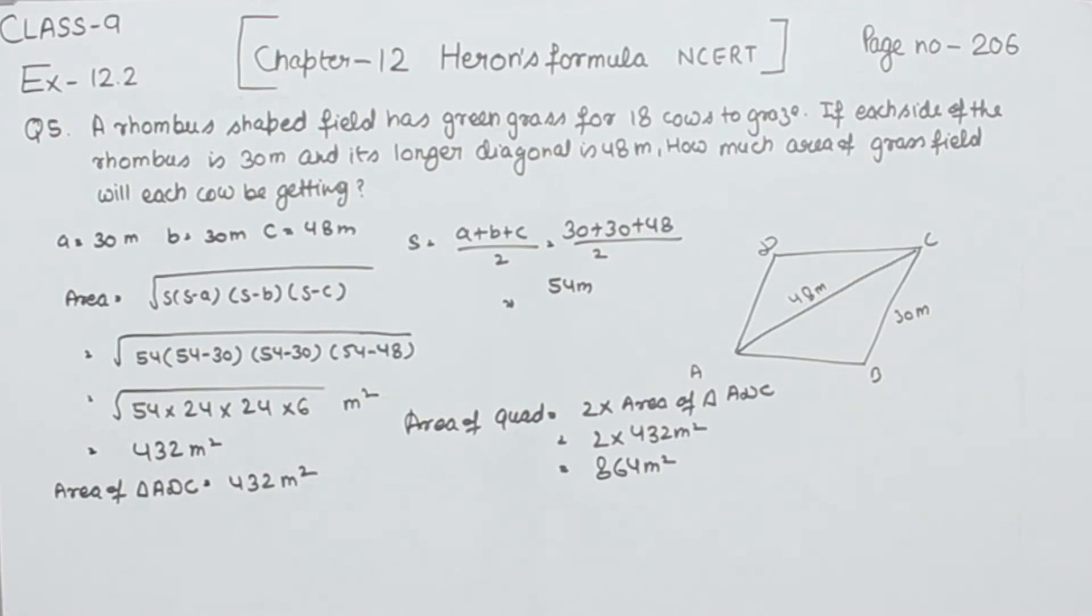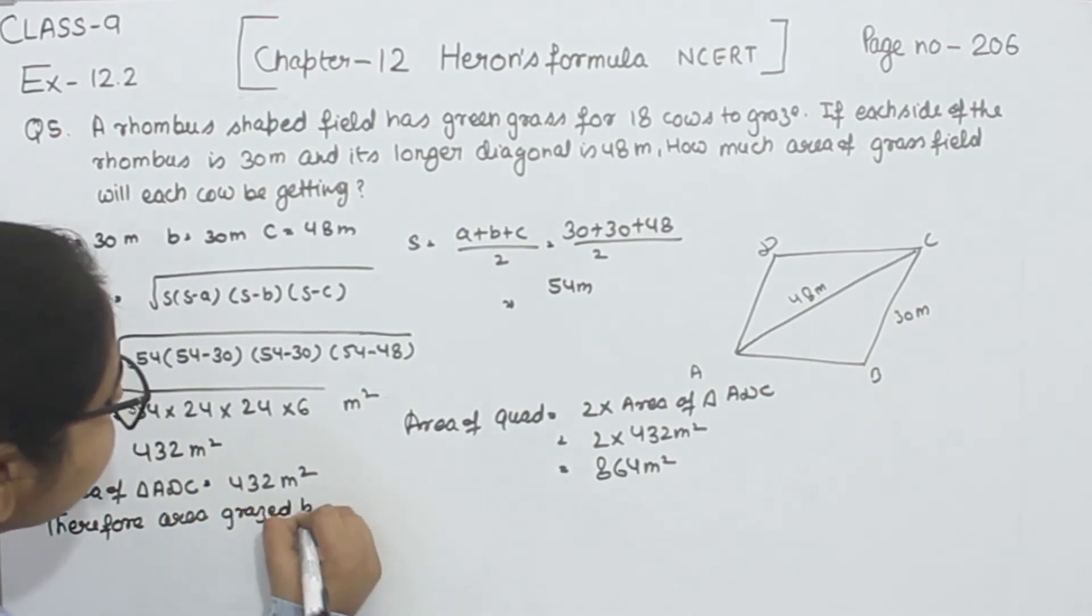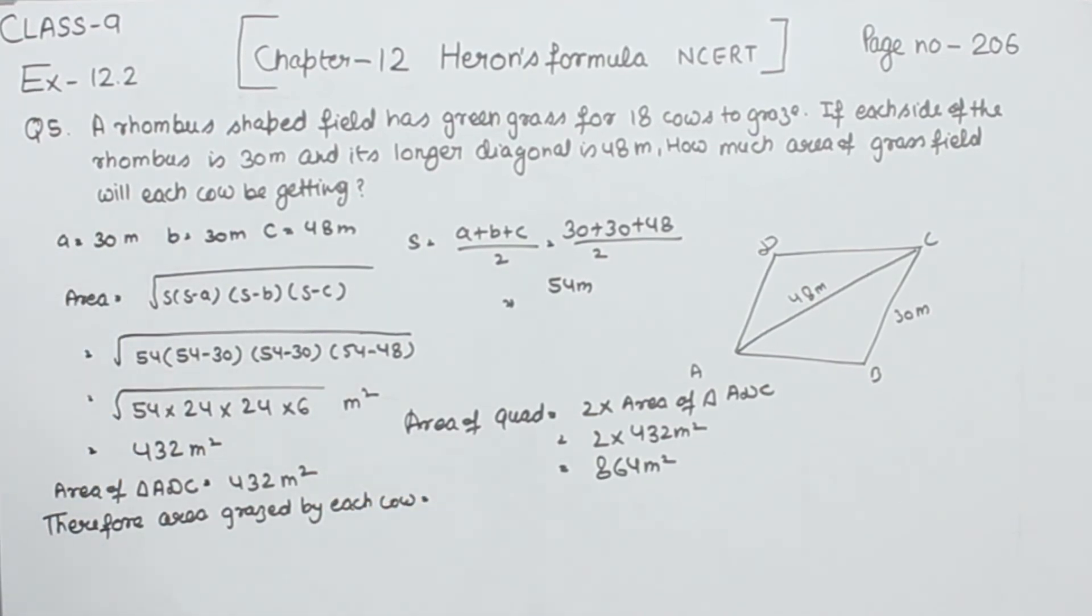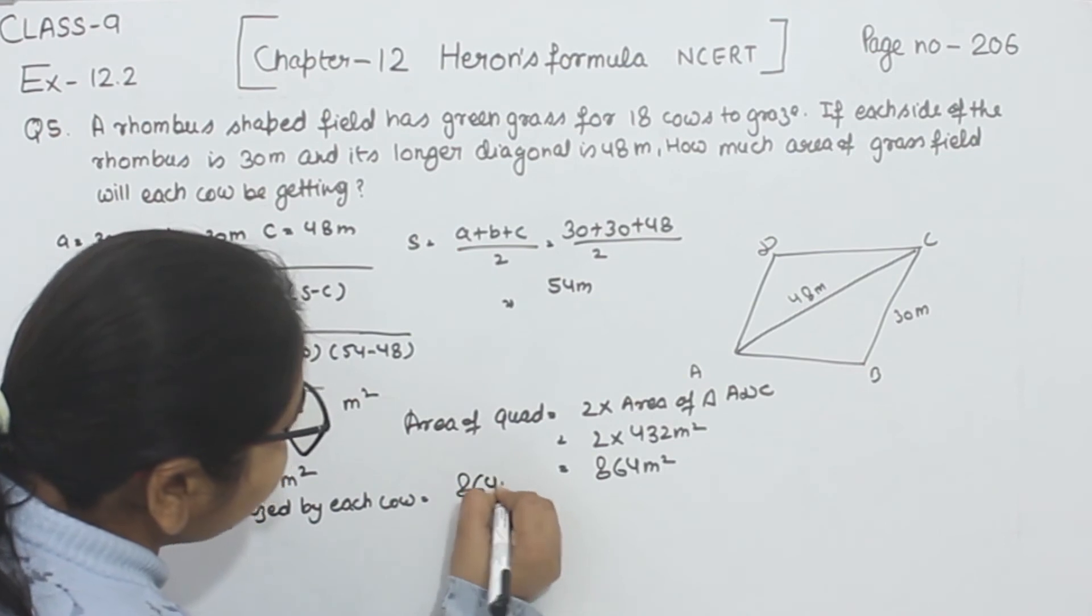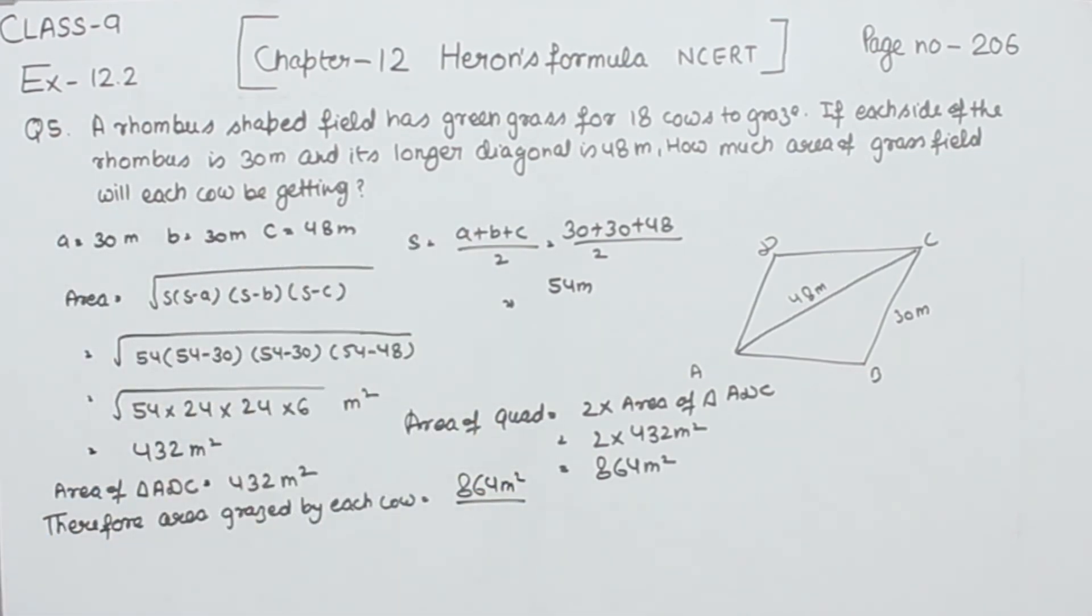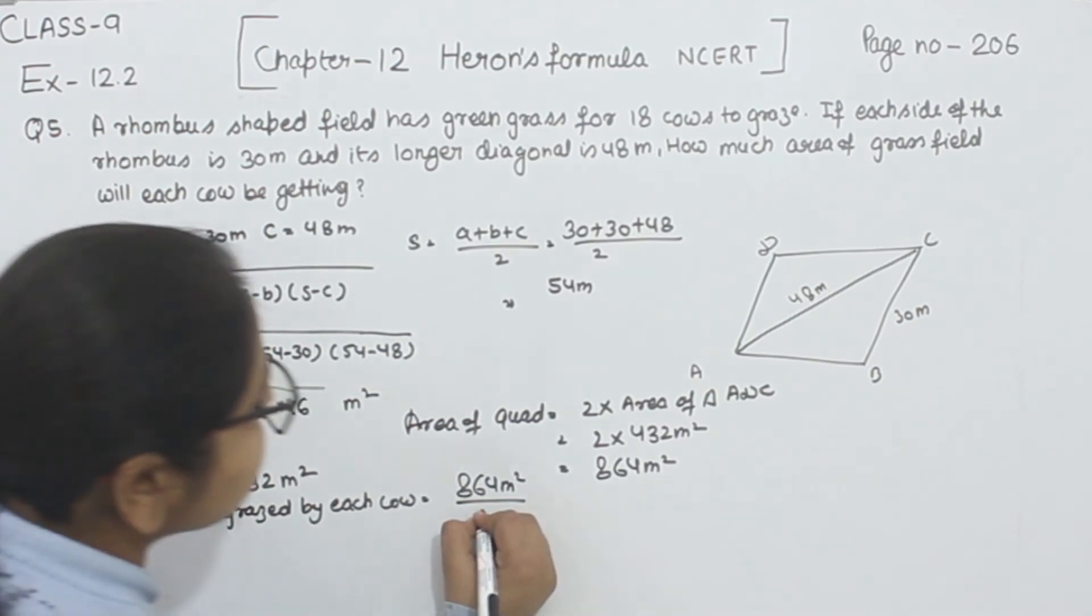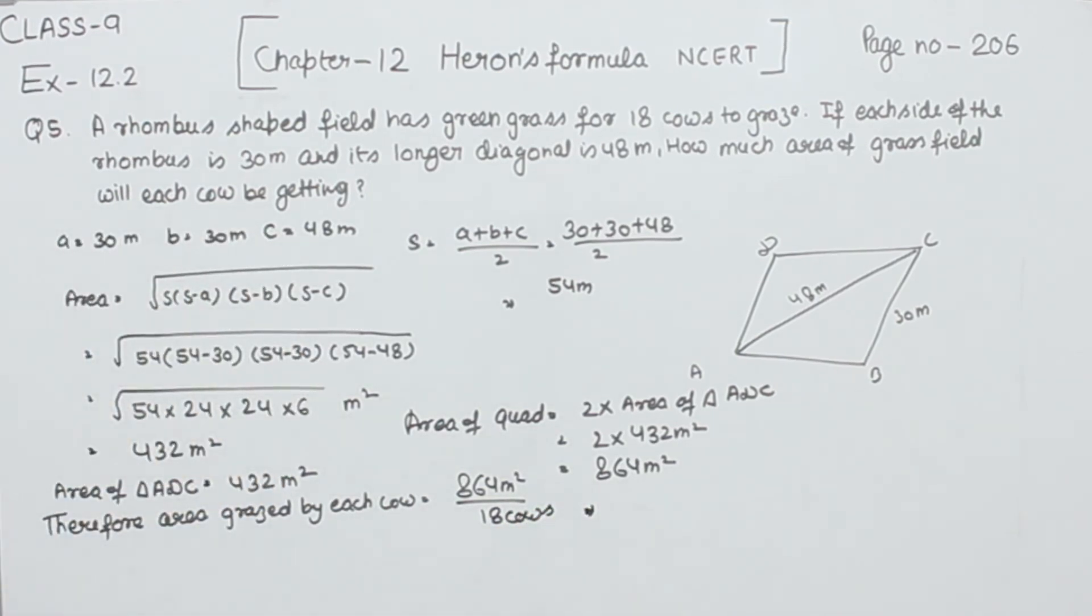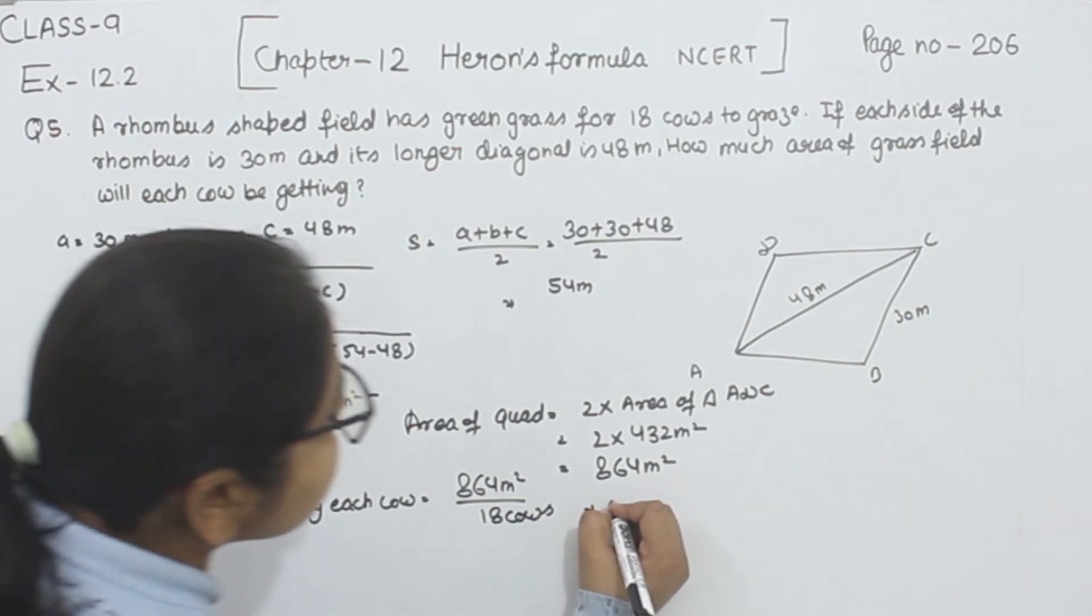Now we have to find the area grazed by each cow. Therefore, area grazed by each cow is equal to 864 meter square divided by the number of cows, which is 18. So we are going to divide it and get the value as 48 meter square.